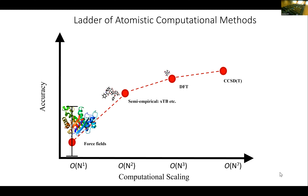You train on one system and apply it to another system, and then it doesn't work. Your uncertainty is typically very high. If you want to systematically decrease this uncertainty, you have to climb this ladder, which includes more and more rigorous quantum mechanical descriptions — semi-empirical tight-binding, density functional theory, coupled cluster theory.